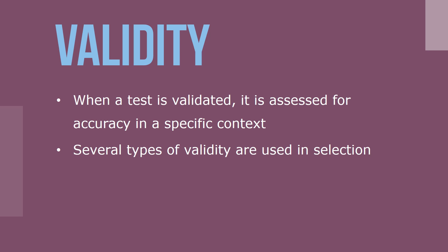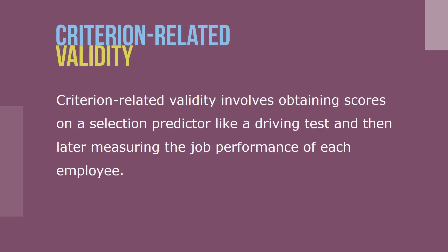Several types of validity are used in selection. Criterion-related validity is one method for establishing the validity associated with a predictor. It involves obtaining scores on a selection predictor, like a driving test, and then later measuring the job performance of each employee. Then statistical analysis is used to identify a relationship between the two scores.